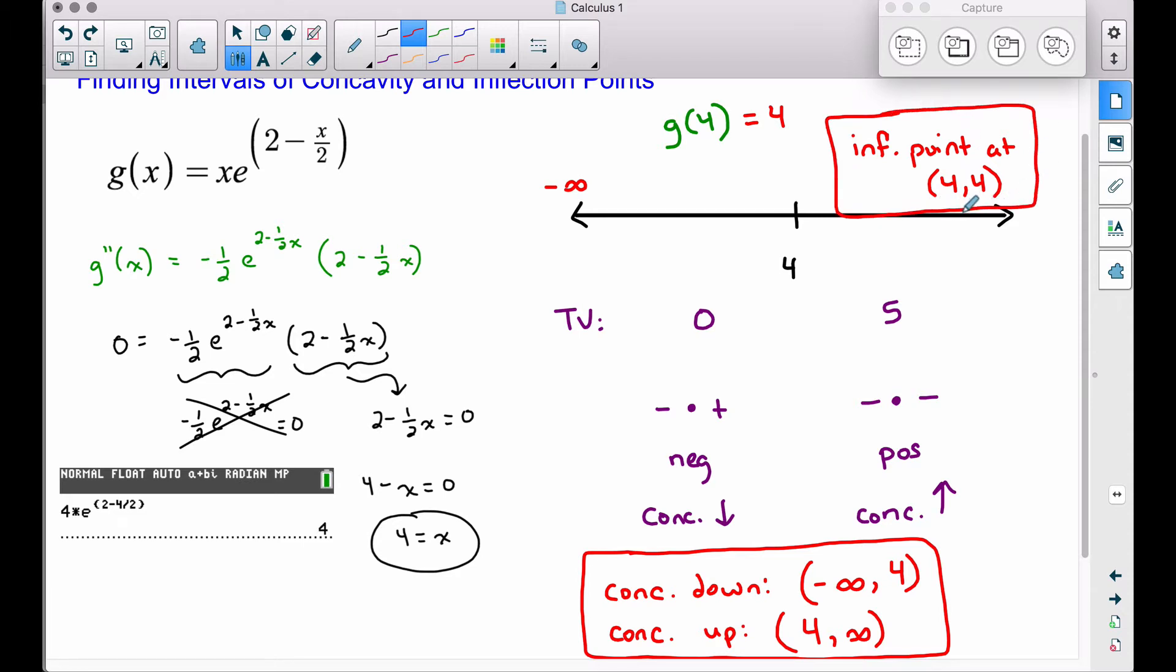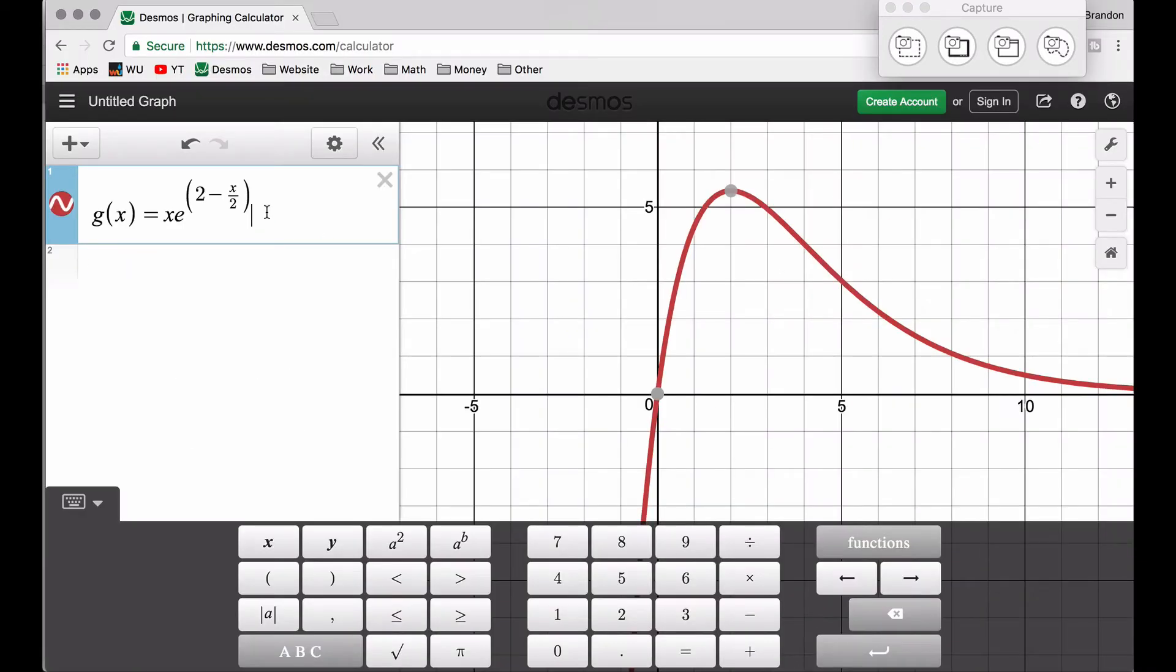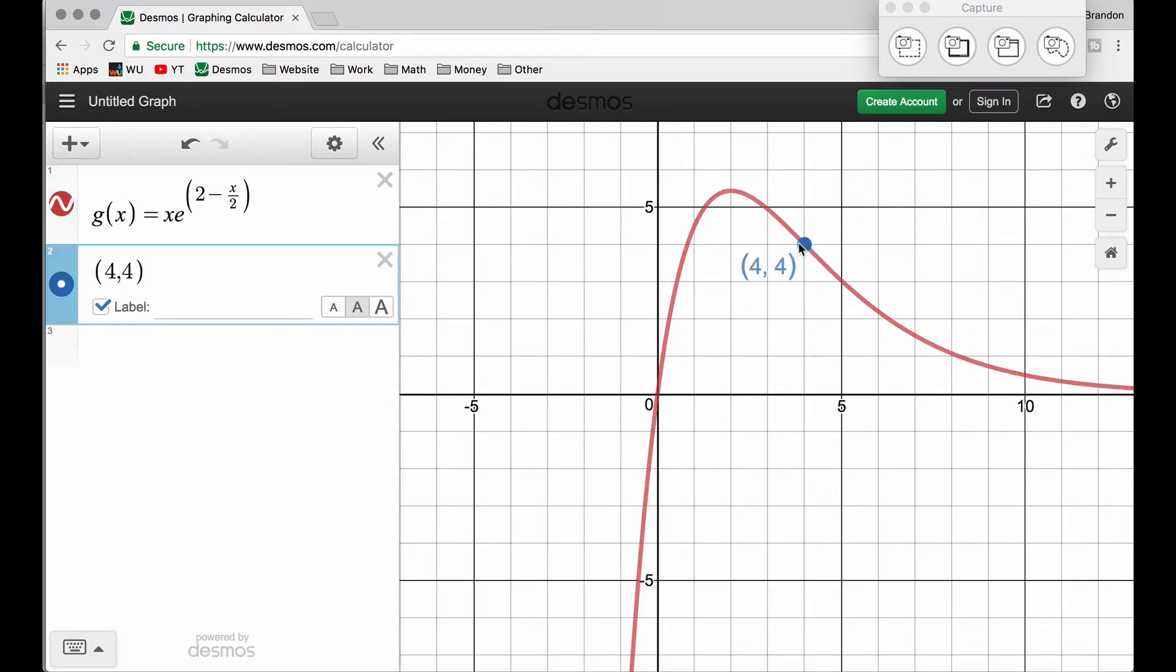Let's go over to Desmos and see if we can pinpoint this inflection point. So here's our curve g of x and let's plot that point four comma four. At this spot that we have right here, notice the function is concaving down, but right there is where the function starts to concave up. You can see it has that switch and it happens at exactly this point, four, four. We go from concave down to concave up at this spot here.